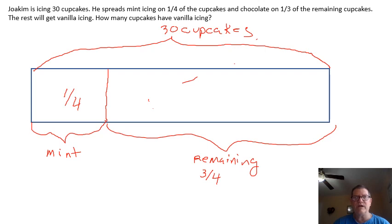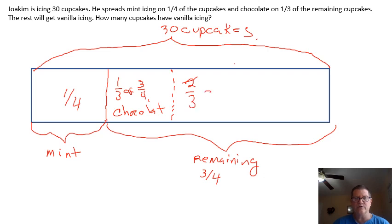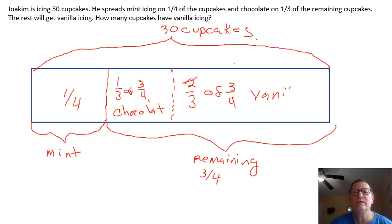It says one-third of the remaining cupcakes got chocolate. So I'm going to come up here — one-third of three-fourths got chocolate. Now looking overall, one-third of three-fourths means there has to be two-thirds left. So two-thirds of three-fourths — that is what got vanilla. I can see that if I take two-thirds of three-fourths it should give me how many got vanilla.